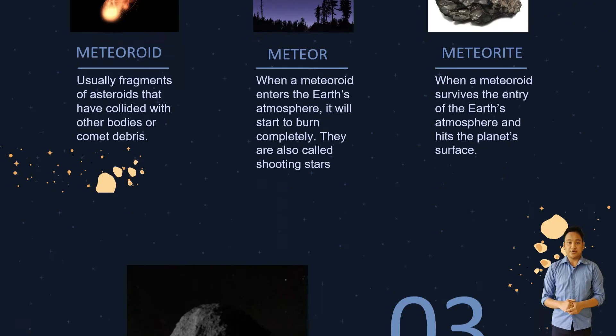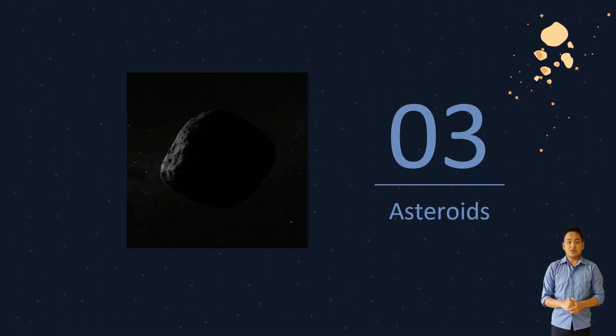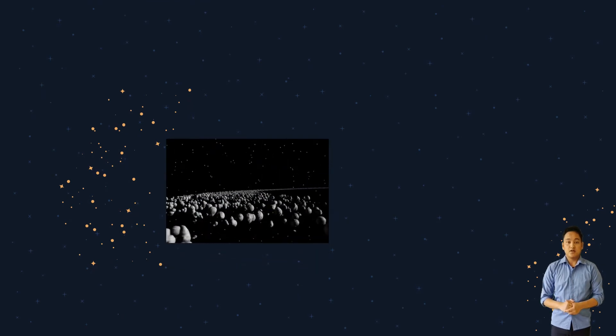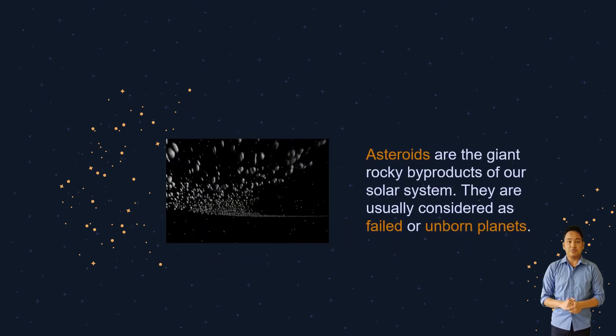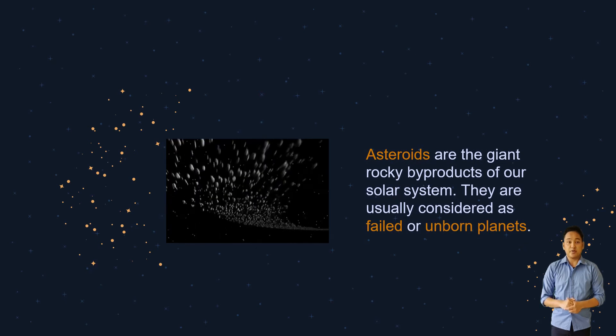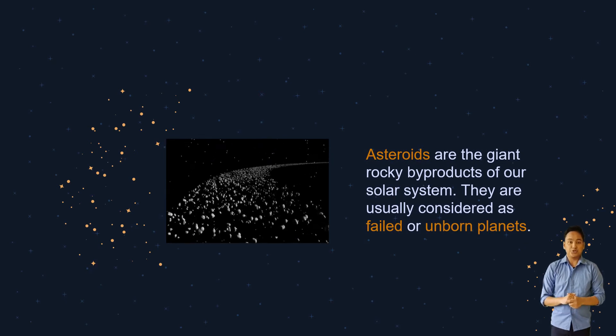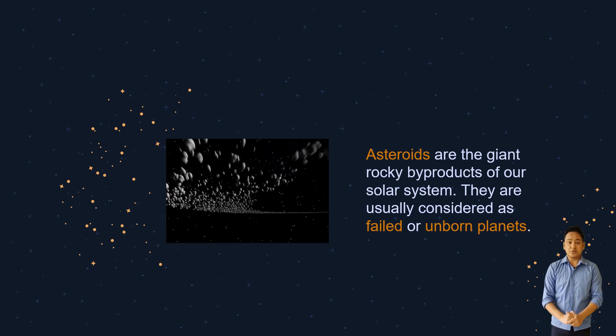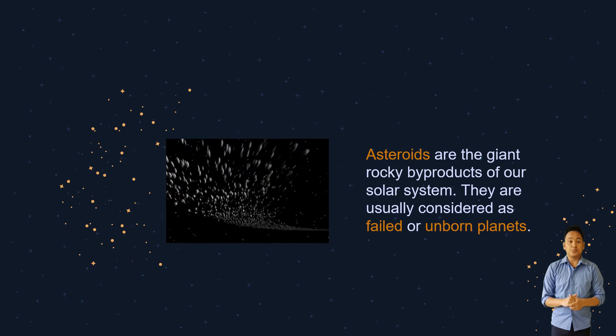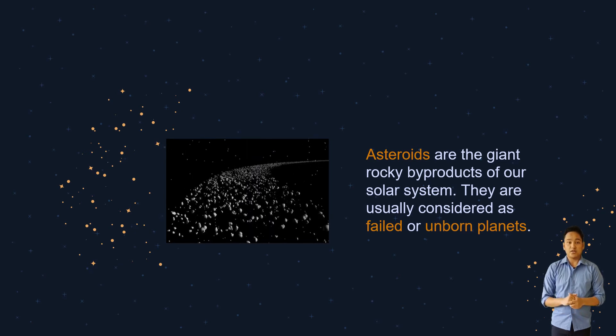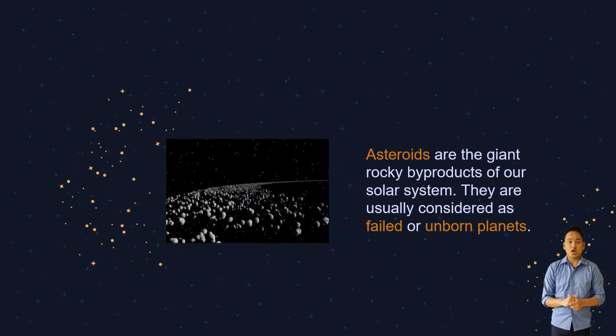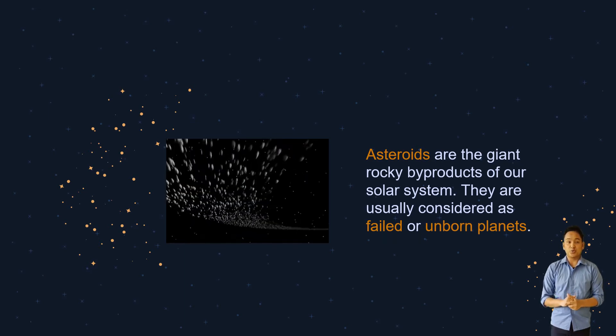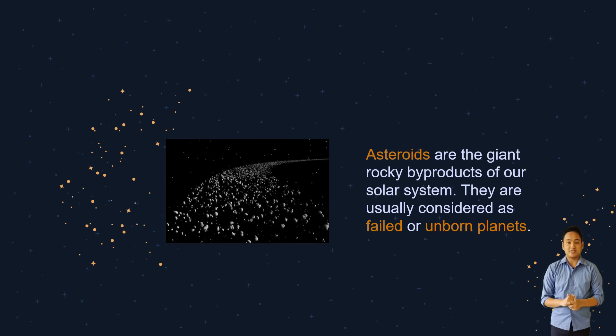Next are asteroids. Asteroids are the giant rocky byproducts of our solar system. They usually orbit around the sun in an asteroid belt that is located between Mars and Jupiter. The asteroids in the asteroid belt never came together to form a planet because of Jupiter's strong gravitational pull. Asteroids are usually remembered as failed or unborn planets.